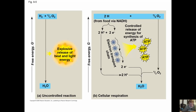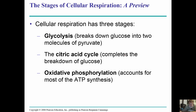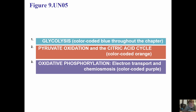Rather than having a very large change in delta G, which would result in a lot of heat and an explosion, we do relatively small steps. Cellular respiration can be broken down into three steps: the first is glycolysis, the second is the citric acid cycle, and the third is oxidative phosphorylation, also called the electron transport system.